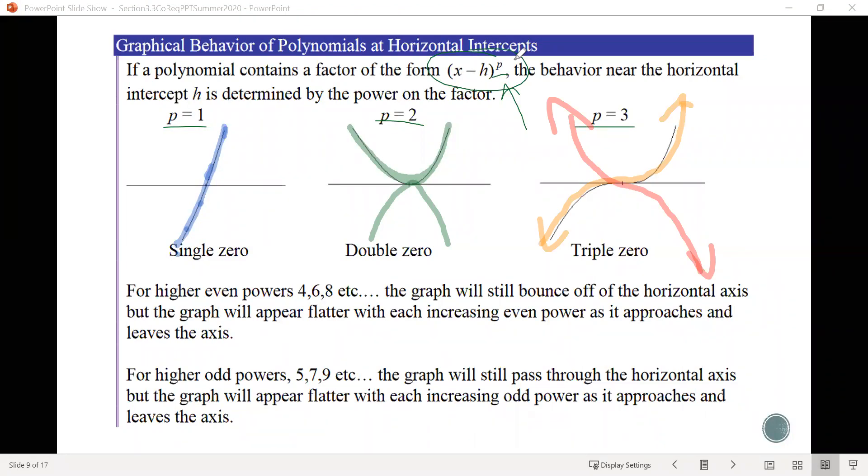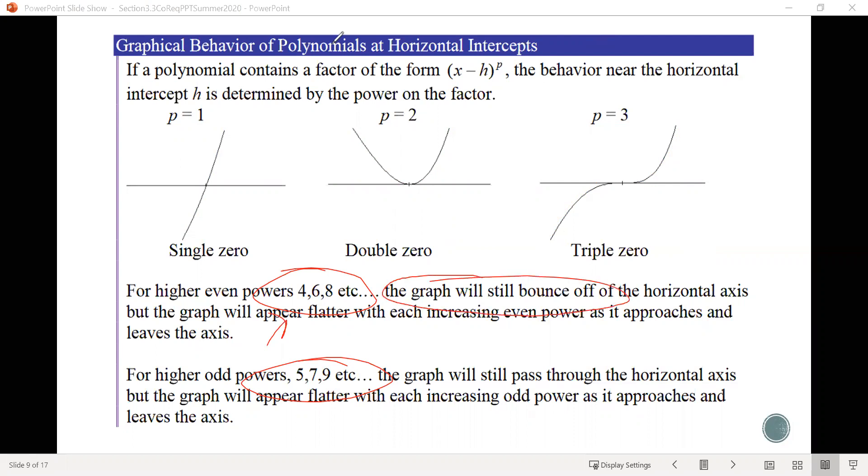So that's what the multiplicity tells us. And then further, if you read below, it tells us that if we have higher powers, so if we have things above 1, 2, or 3, so like 4, 6, 8, 5, 7, 9, well, if we have 4, 6, and 8, so basically any even power above 2, we get basically the same shape as what we have for if the power is 2. So more or less, we're going to get a bounce at that horizontal intercept.